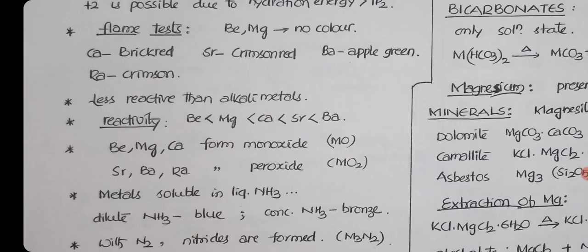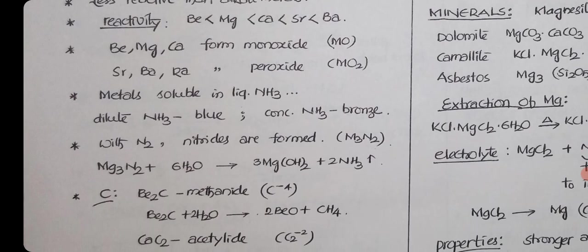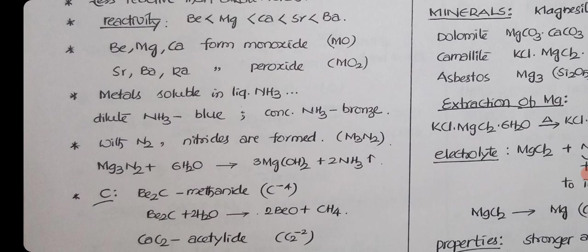These are comparatively less reactive than alkali metals because of fulfilled electron configuration. Down the group reactivity increases. Beryllium, magnesium, calcium form monoxides. Strontium, barium, radium can form peroxides also. With ammonia, the reaction is very similar. Dilute ammonia blue color, concentrated ammonia bronze color, they are conductors because of solvated electrons. Every line is same.